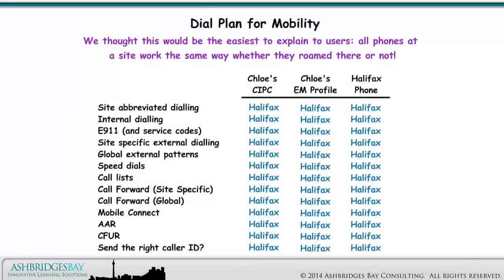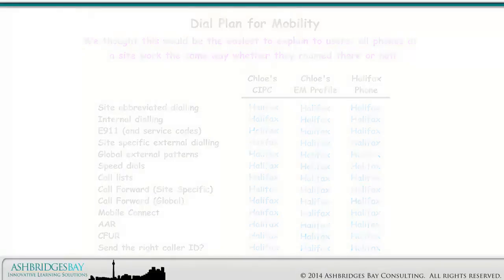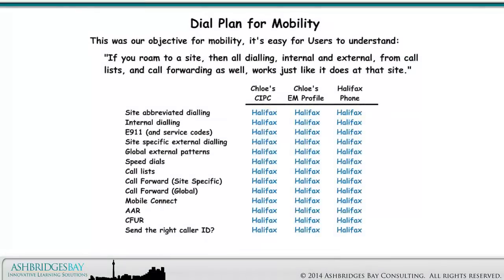We thought this would be the easiest to explain to users: all phones at a site work the same way, whether they roamed there or not. This was our objective for mobility — it's easy for users to understand. If you roam to a site, then all dialing, internal and external, from call lists and call forwarding as well, works just like it does at that site. It turns out that this cannot be implemented with CUCM version 9.1.2.